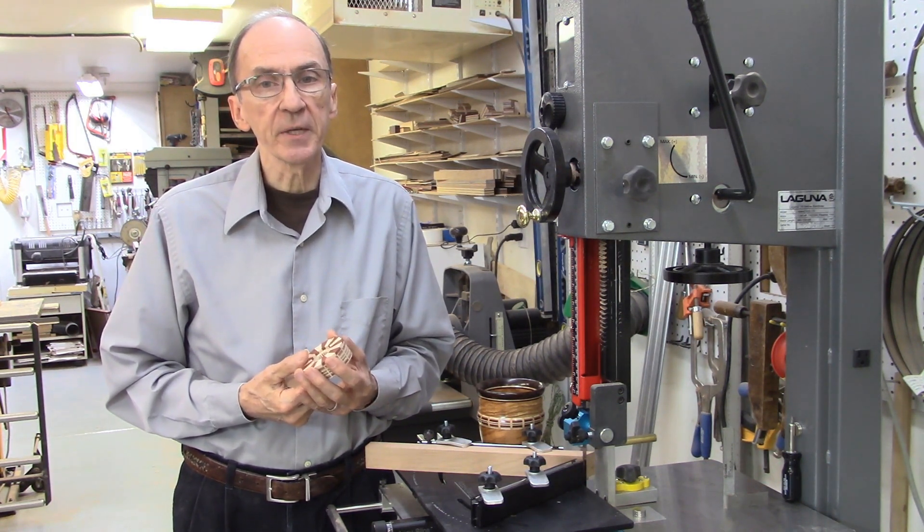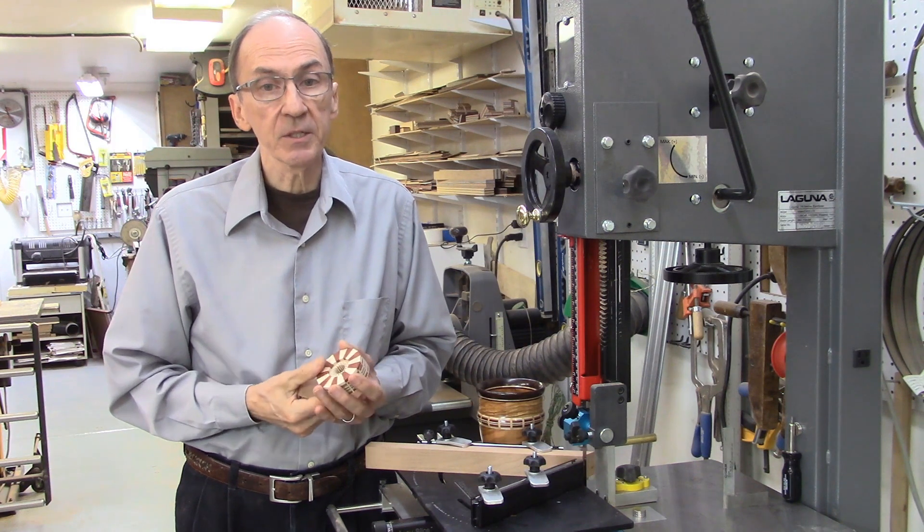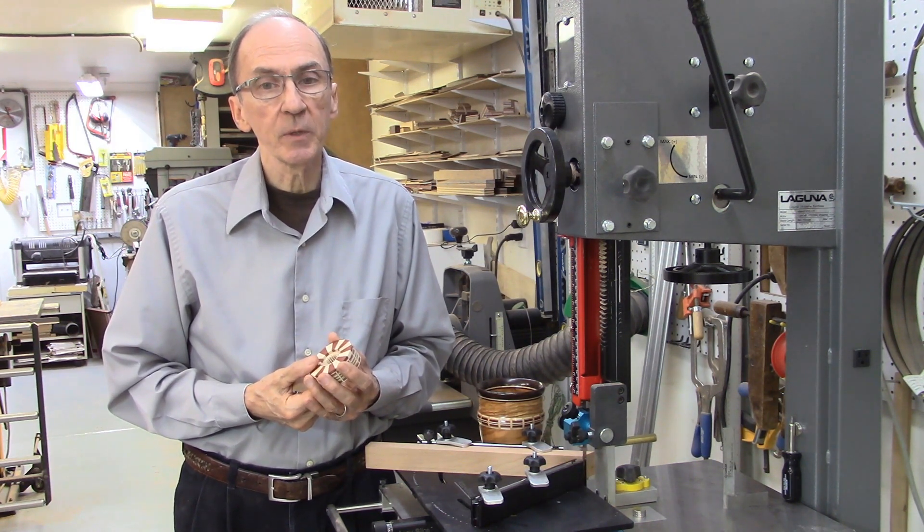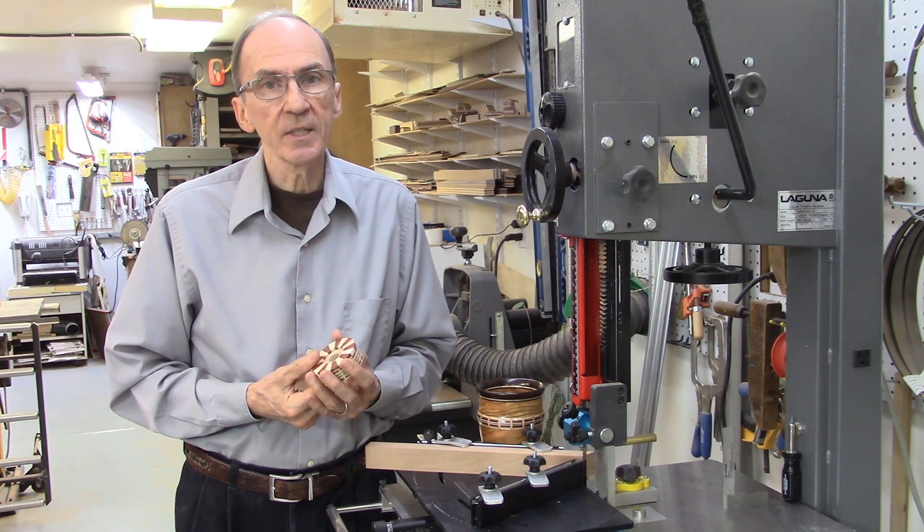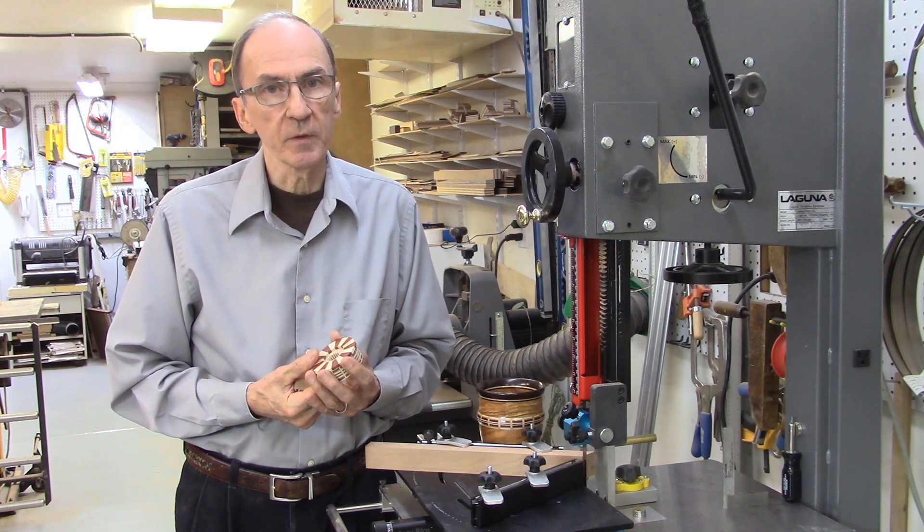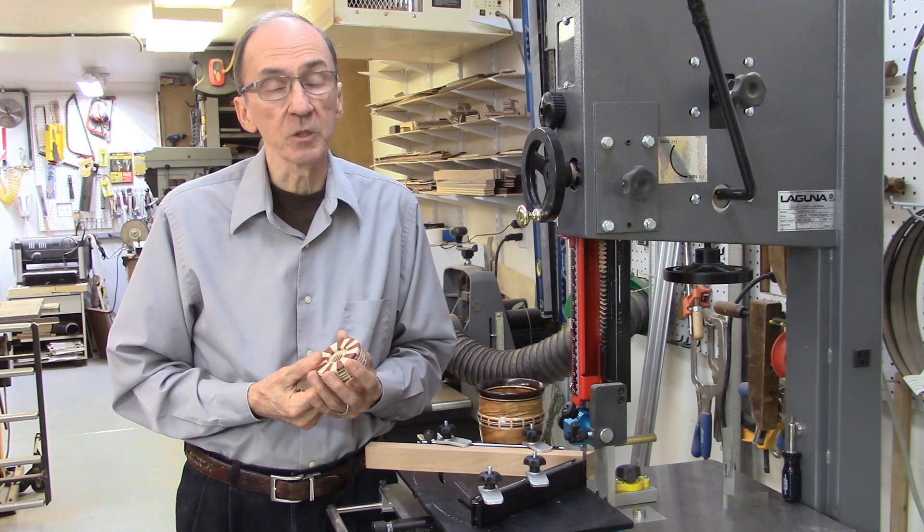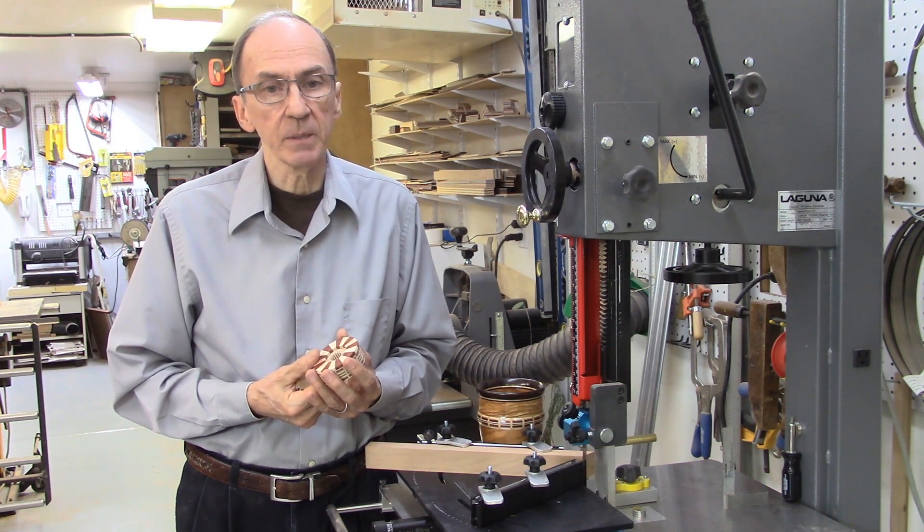We developed a system to accurately cut these wedges on a bandsaw and we call this system the AccuEdge. By cutting these wedges on the bandsaw, much less wood is wasted due to the narrow kerf of the bandsaw blade. In addition, cutting these wedges on the bandsaw is much safer than cutting them on a table saw.